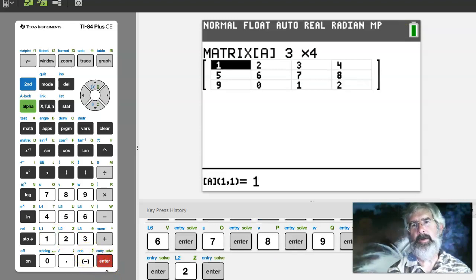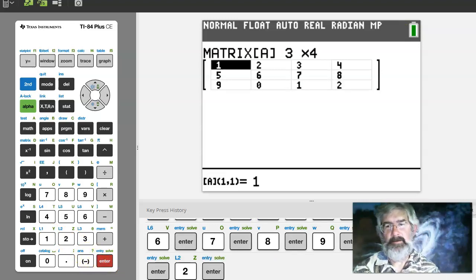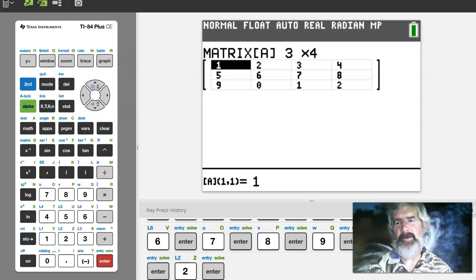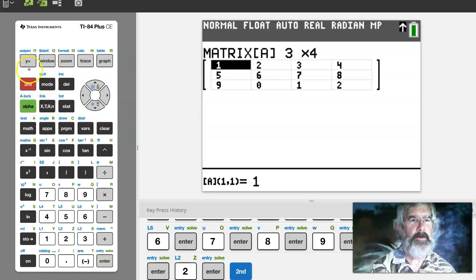Anyway, there's a 3 by 4 matrix and it doesn't take very long to enter stuff in here. When I actually have my hand held calculator I can enter even faster than what I was clicking in here. Anyway, let's go to the home screen.